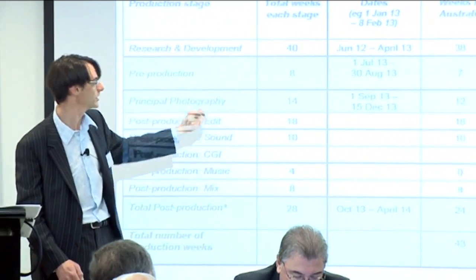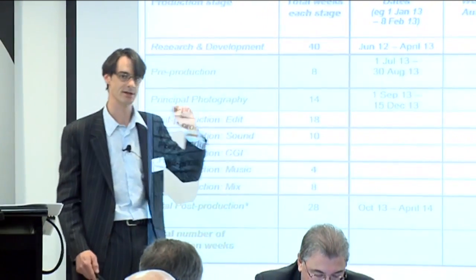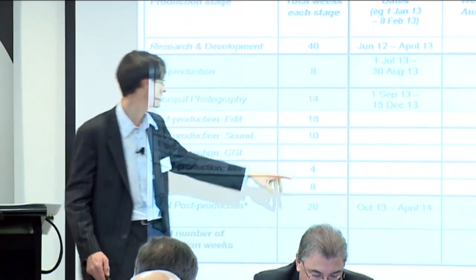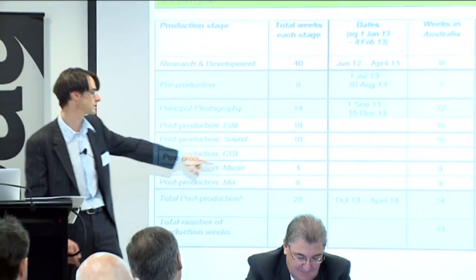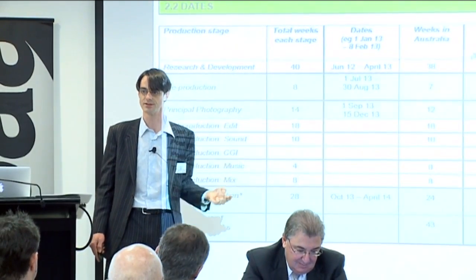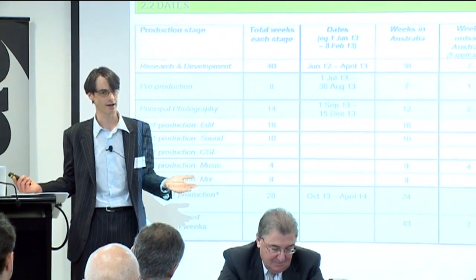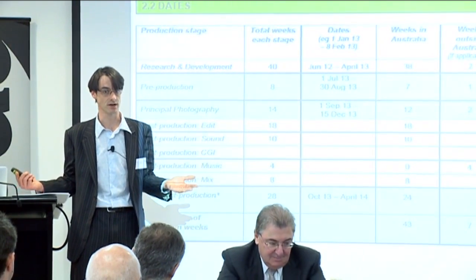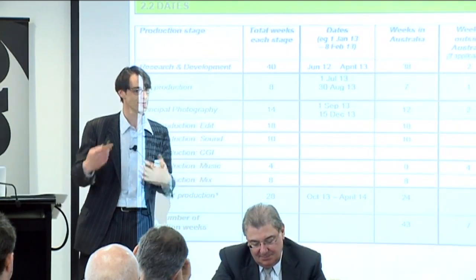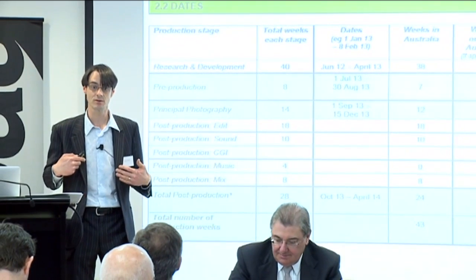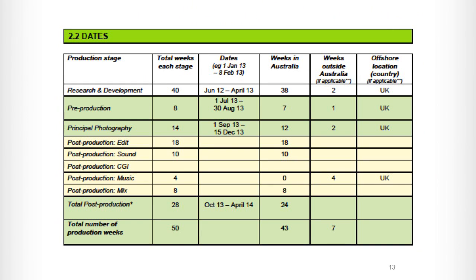As Susan said, this triggers a lot of things for us — it triggers an assessment of those matters in the SAC test. It can also flag interesting things: in this example, we've got the music being done in the UK. Now if you've got in your application form that it's an Australian composer, that's going to raise a question. It's unlikely you'd be doing the music in the UK with an Australian composer. That's another example of something you should pre-empt — we don't want to have to ask you about it. If you can provide a little contextual information with the application, it'll save everyone a truckload of time.